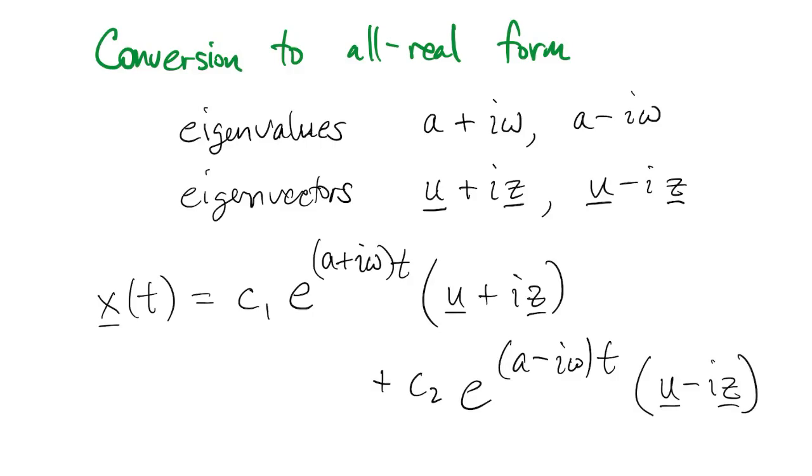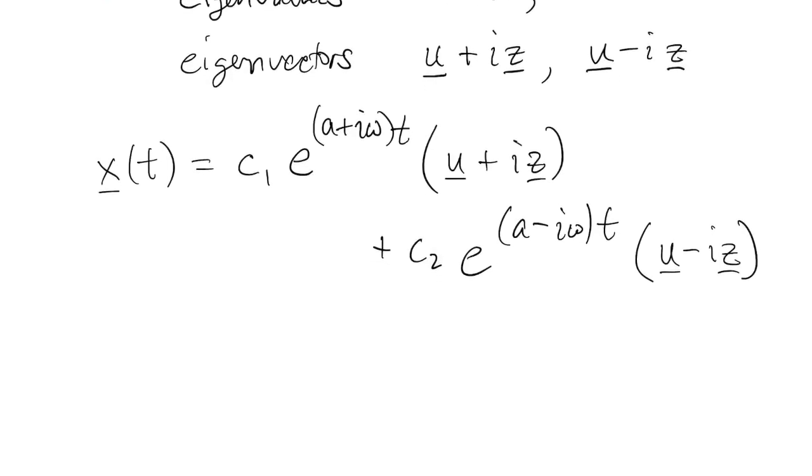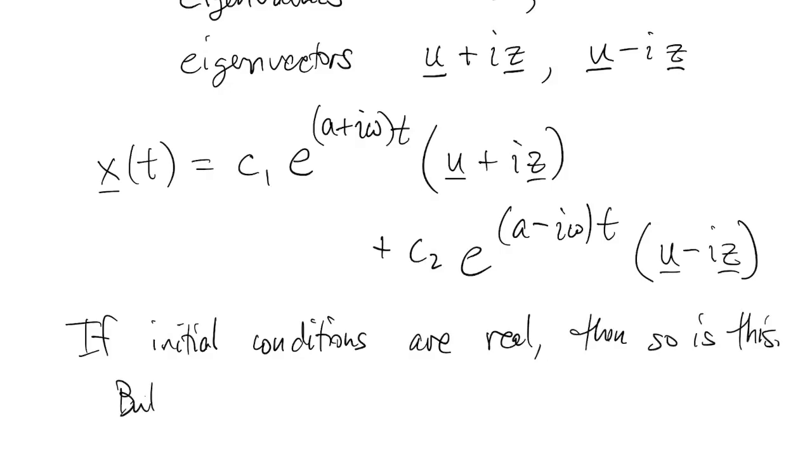Now, if the initial conditions of the problem are real, then this formula actually is also real-valued. If the imaginary part starts at zero, it stays at zero. But it's not quite obvious that it's real. It doesn't really look real because of those complex numbers. Sometimes we want a solution that also looks real without ambiguity.